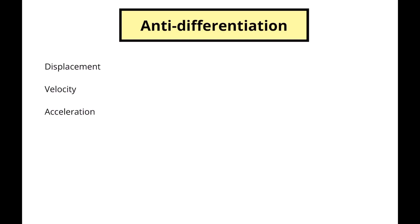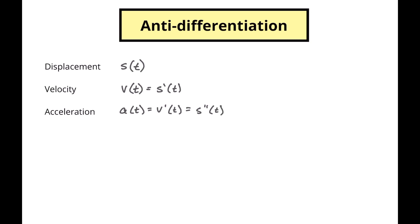In physics, and sometimes in math, we have this thing called displacement, velocity, and acceleration. Displacement is often written as S of T — that's displacement. Velocity is written as V of T. Velocity is the first derivative of displacement. And then you have acceleration, which is the derivative of velocity, or the second derivative of displacement. So we can see that each of these things are derivatives of each other. But what happens if you have the velocity and you want to go back to the displacement? How do you do that? That is anti-differentiation — if we've already got the derivative, how do we go back up to that original equation? Let's look at a few examples first.